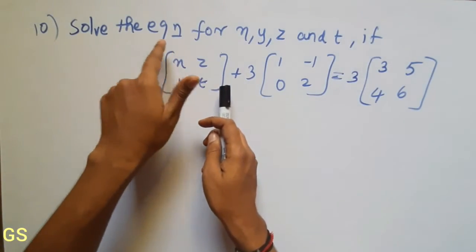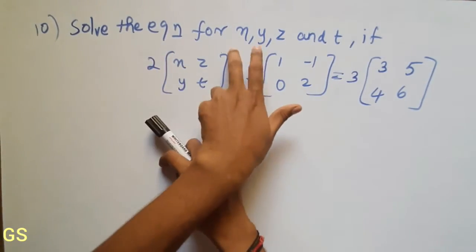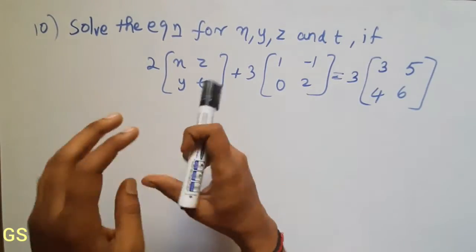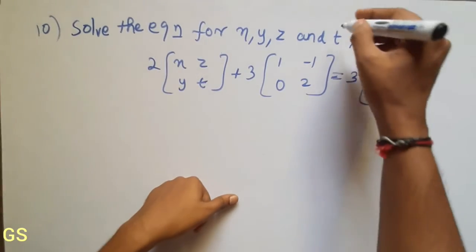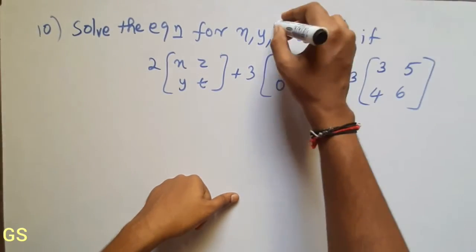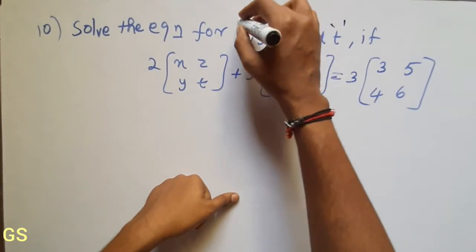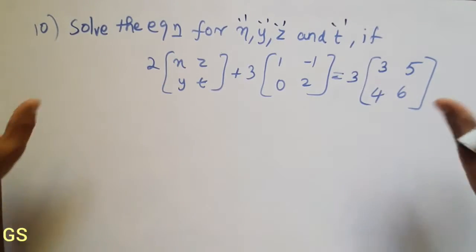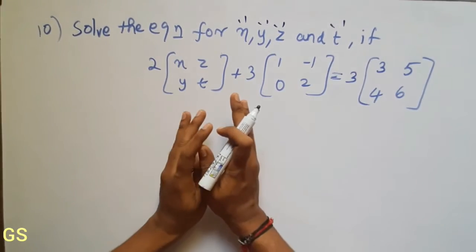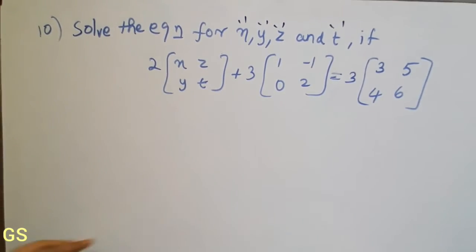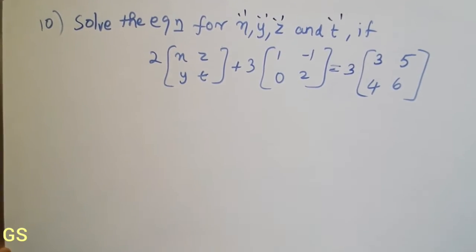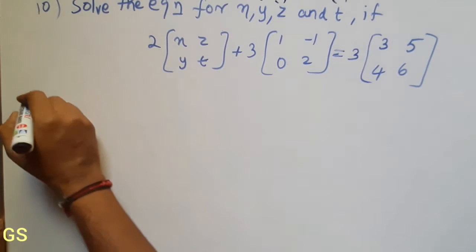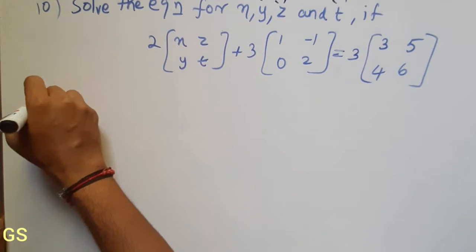Solve the equation for x, y, z and t. So let's do this — x, y, z and t. If we want to do this, it's easy, very easy. Solution.